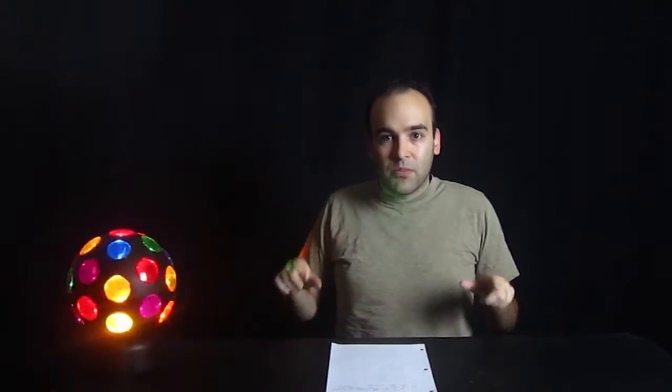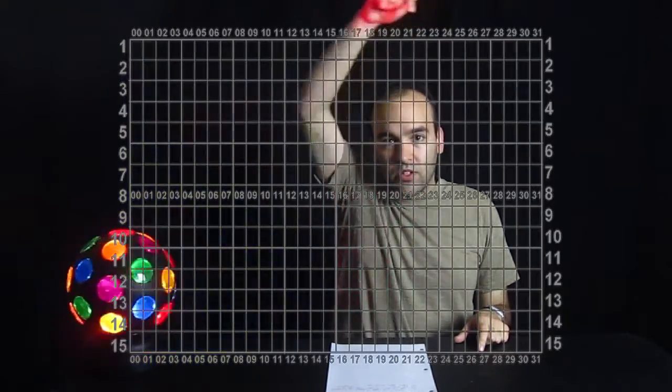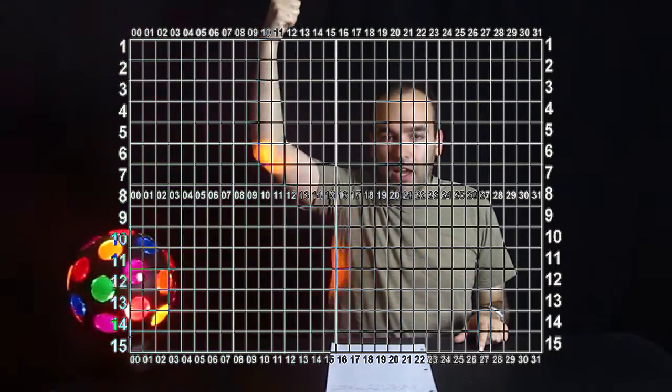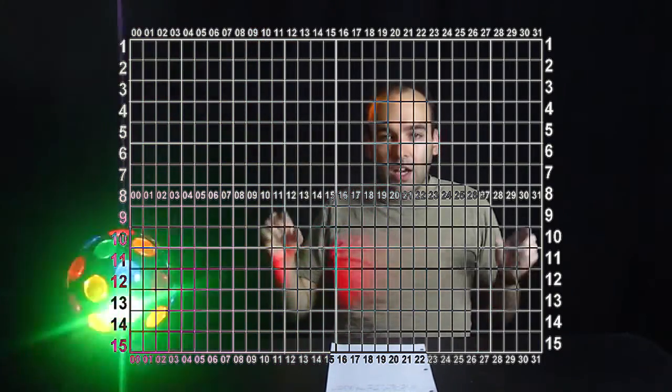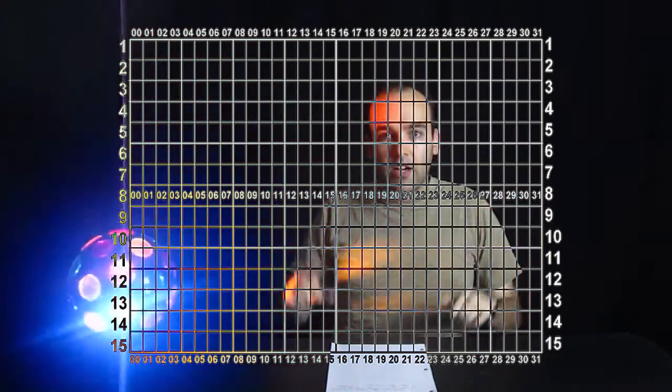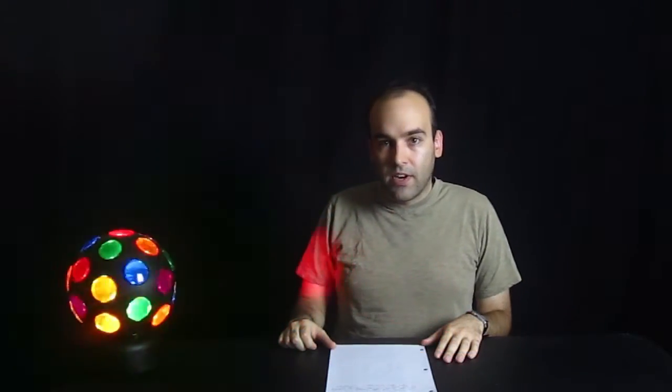The closed caption format divides up the screen into 32 columns and 15 rows, and each square can hold a character. So this is a fixed-width font.